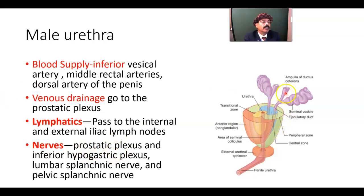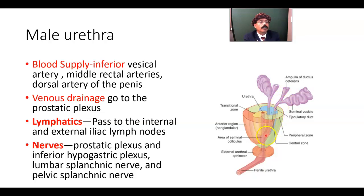Reviewing the prostatic gland: the ejaculatory duct opens into the prostatic part of the urethra beside the utricle. The utricle represents the embryonic uterovaginal canal. The ejaculatory duct is formed by the union of the duct of the seminal vesicle and the ampulla of the ductus deferens. The membranous urethra is the most vulnerable to injury because it is the least dilatable part.